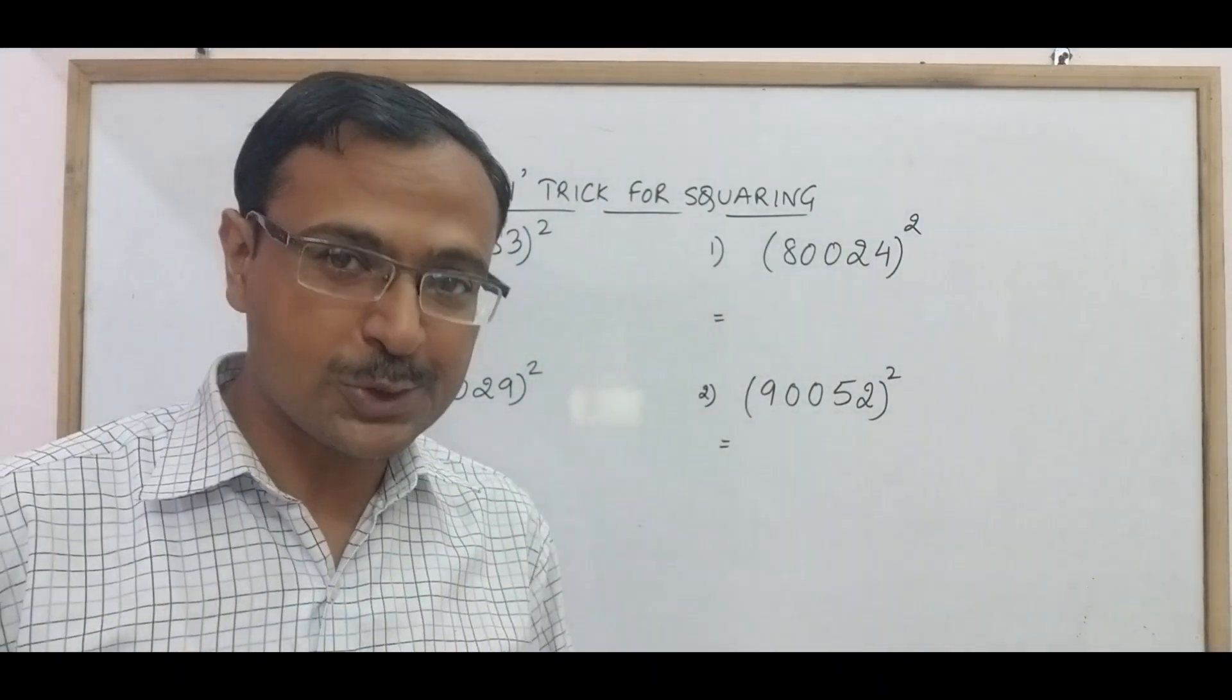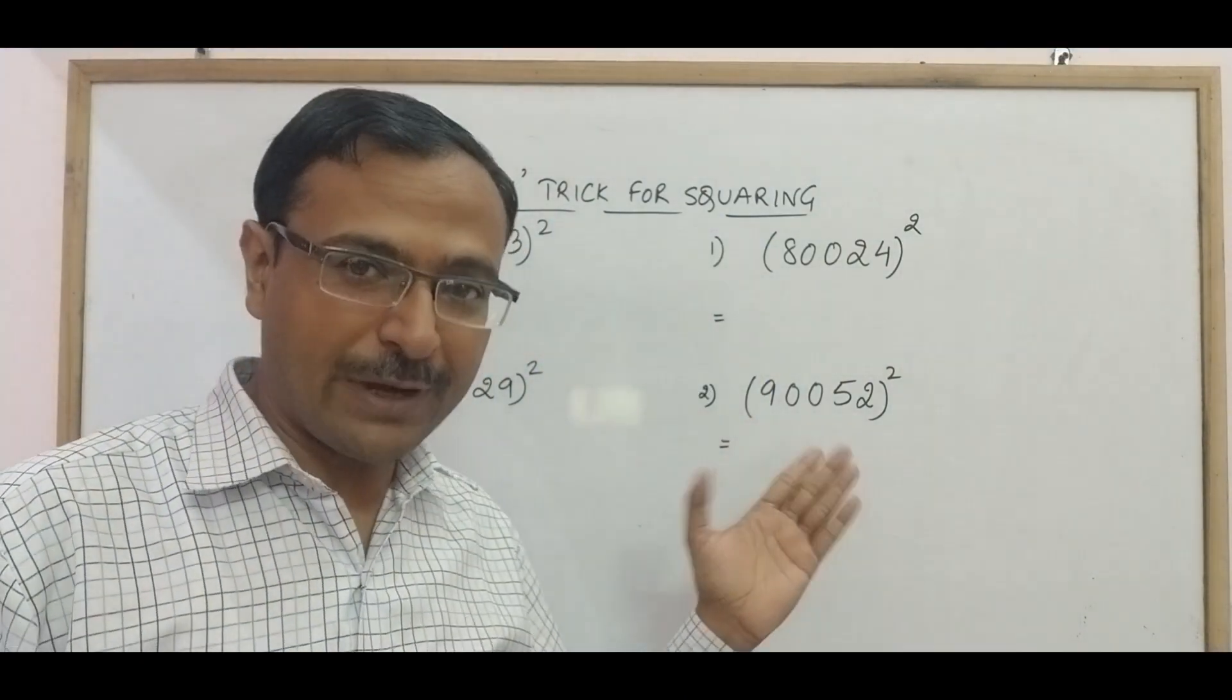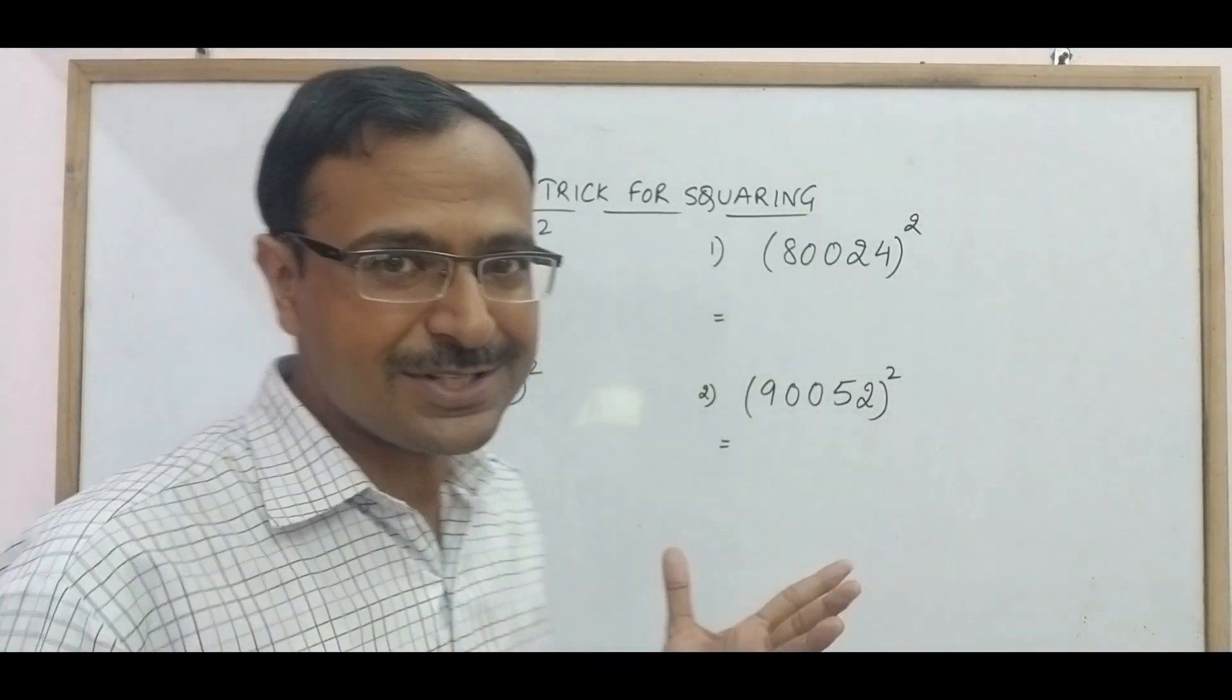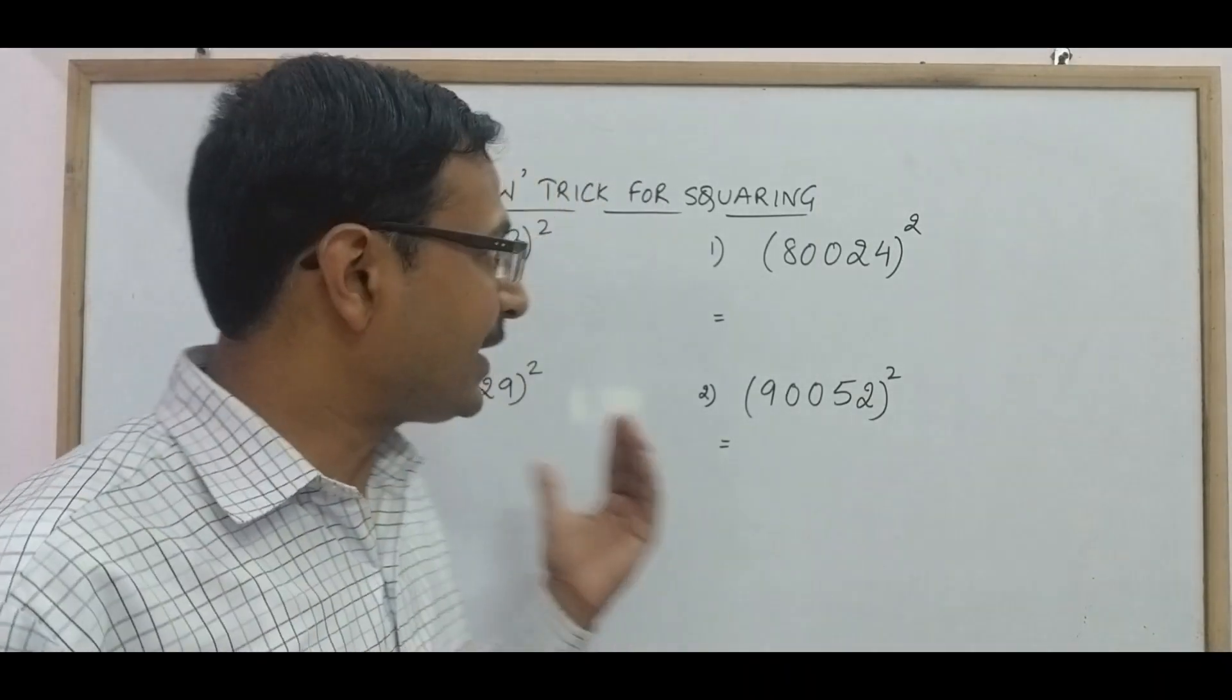80024 whole square, 90052 whole square, even I have a 6 digit number here 110029 whole square. So what do you think, how much time you are going to take to square these numbers?